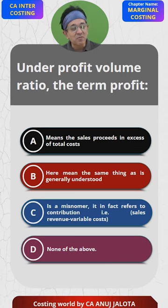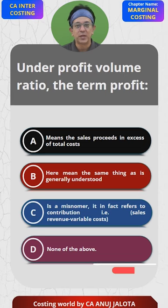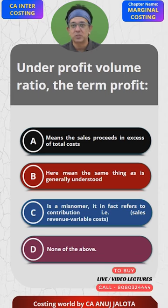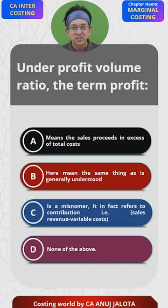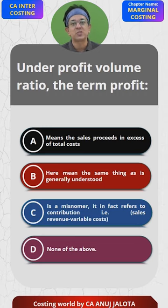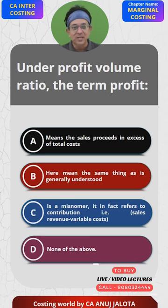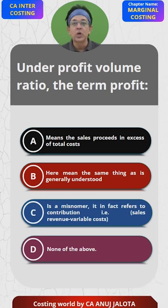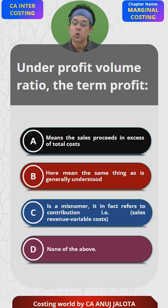In every question in marginal costing, we found our PV ratio. Your PV ratio is nothing but contribution upon sales, not profit upon sales — that will give you net profit ratio. So actually it is a misnomer. We try to say it is profit volume ratio, but we are not concerned with profit actually; we are concerned with contribution.